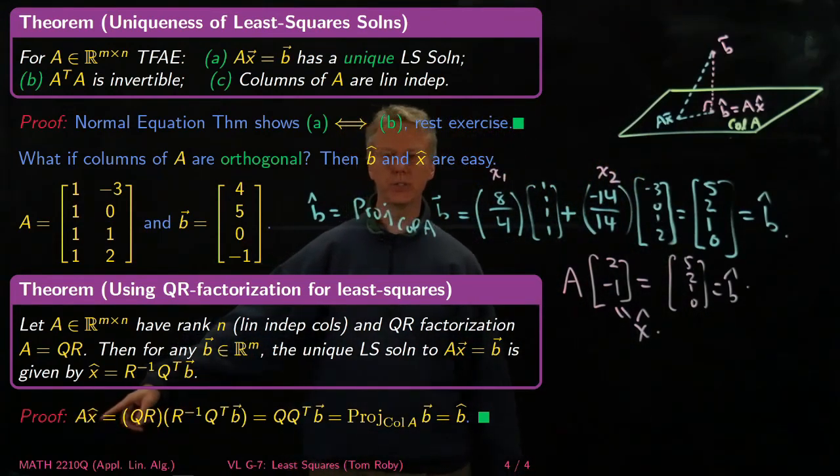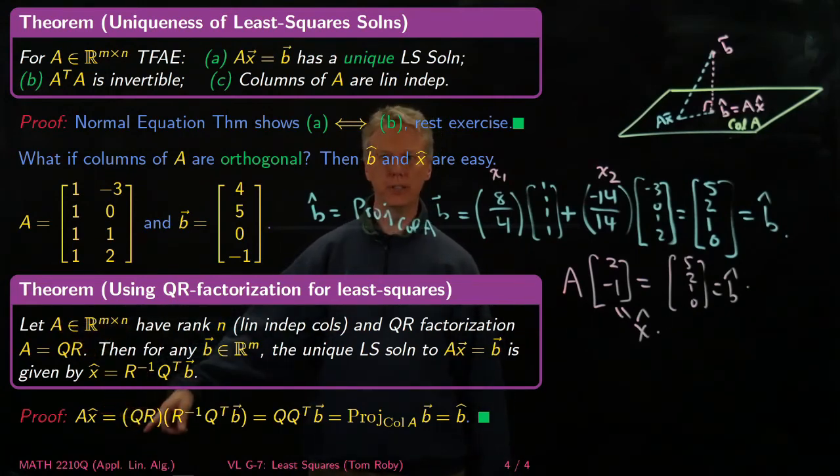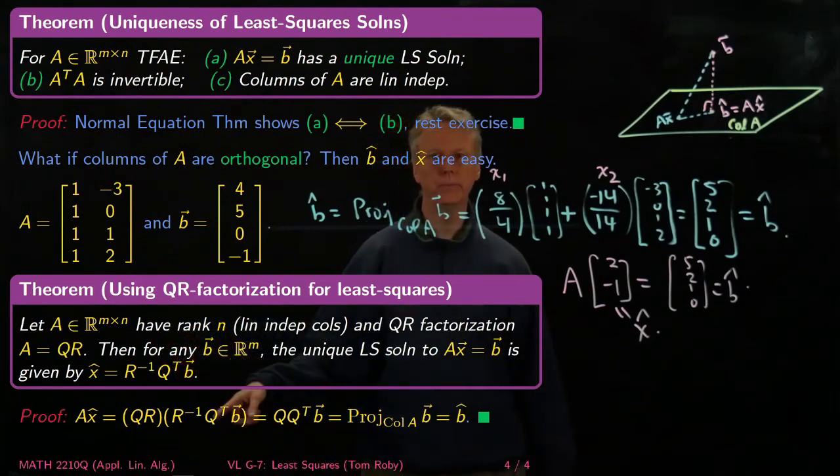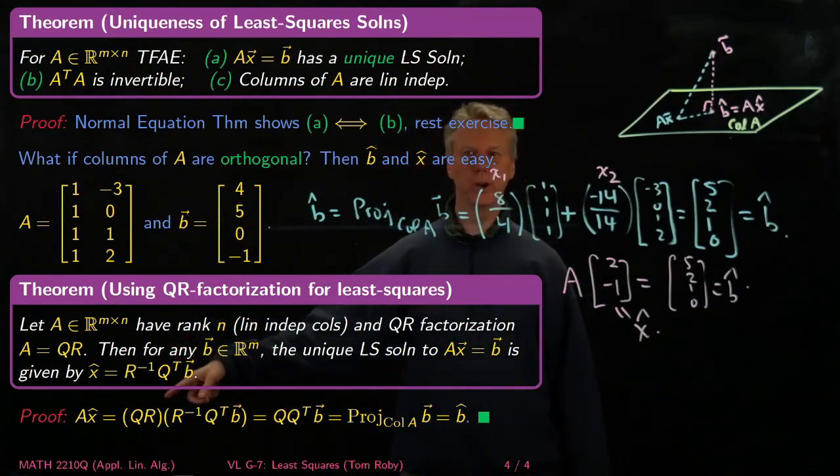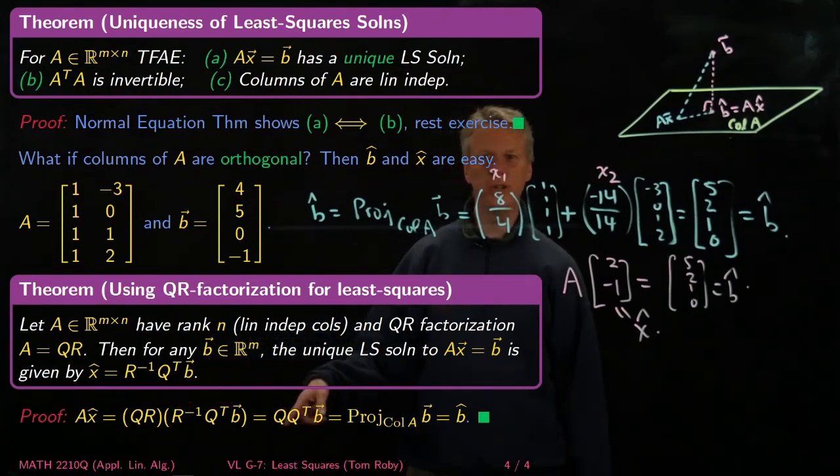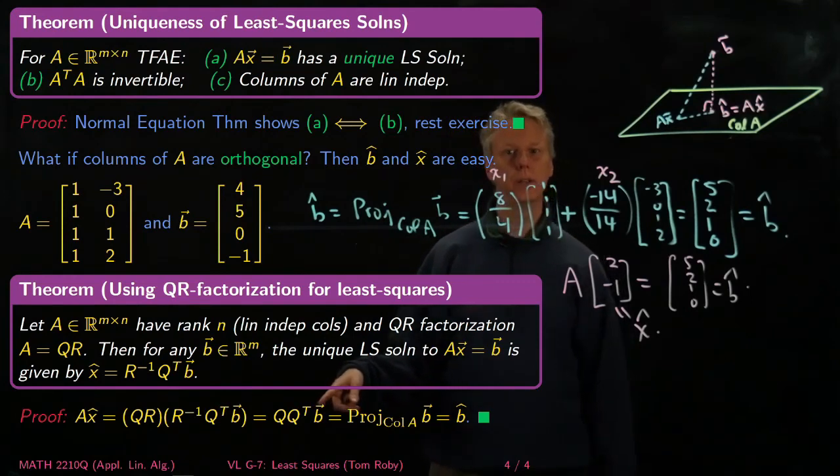So, A times x. Well, we know that A is QR, so you can't stop me from replacing A by QR. And let's see what happens when we apply that to R inverse Q transpose B. Well, QR times R inverse Q transpose B, those R's in the middle cancel because I have R inverse, and I'm just left with Q Q transpose B.